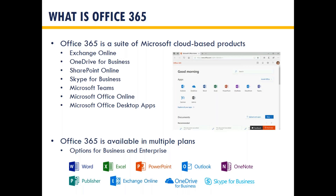Office 365 is available in multiple plans. Each of these products is available as a standalone product, but Office 365 pieces them together into different bundles that might suit an organization. Microsoft categorizes these in two main tiers: the Business tier and Enterprise. Business plans can go up to organizations of 300 users, though organizations with fewer than 300 users can still use plans in the enterprise tier. Enterprise plans are just how Microsoft has structured the different bundles.